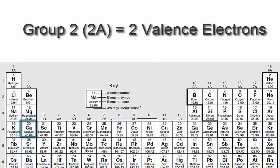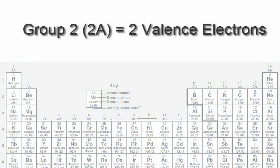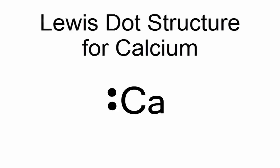So calcium is in group 2 or 2A. It has two valence electrons, as do all of the elements in group 2A. We'll put those two valence electrons next to the element symbol CA for calcium. So that's the Lewis dot structure for calcium.